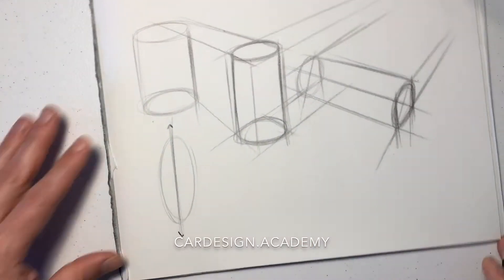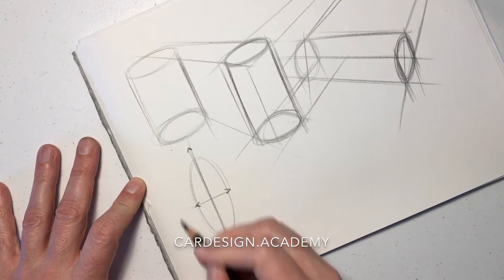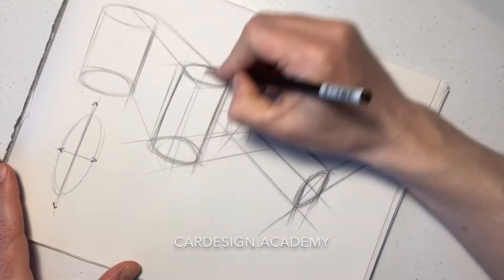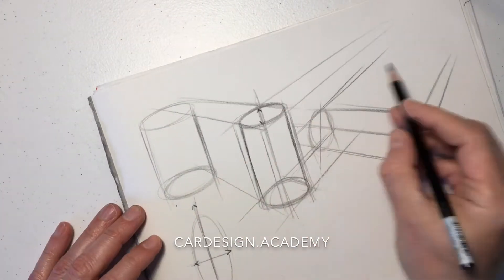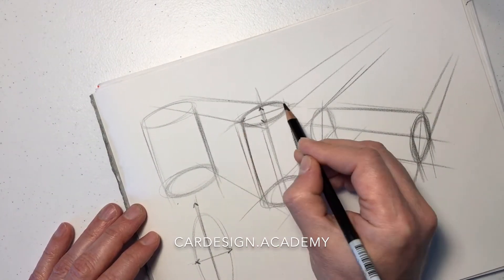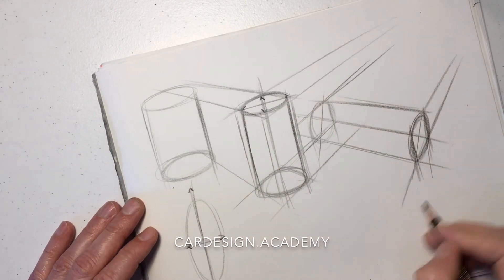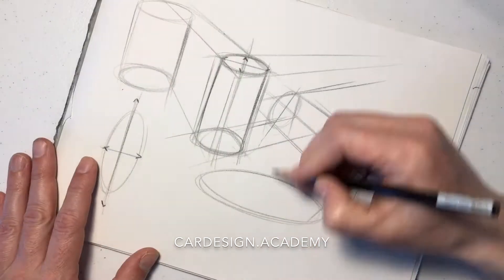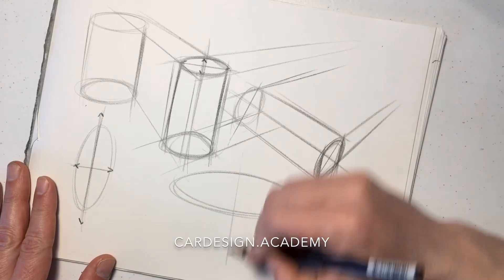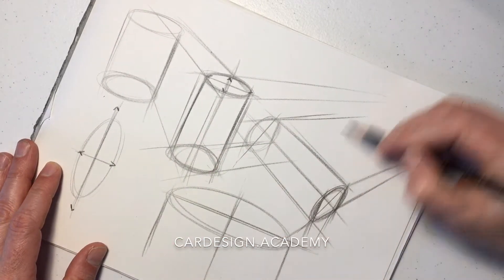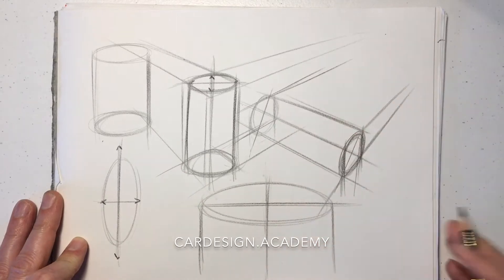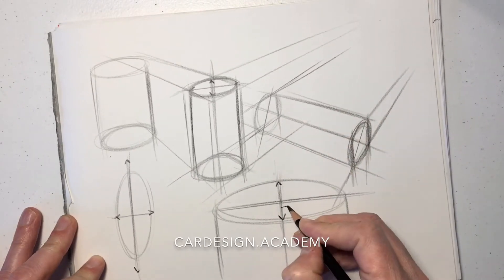Now ellipses have what is called a major axis and a minor axis. The major axis is the longest part of the ellipse and the minor axis is the shortest part of the ellipse. And they're always 90 degrees apart from each other. So no matter what orientation your ellipse is, that major axis and that minor axis are 90 degrees. And that's very important to remember.